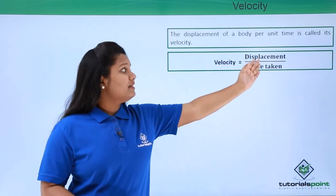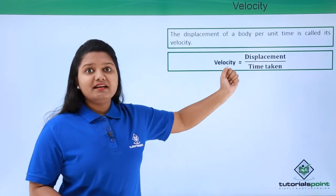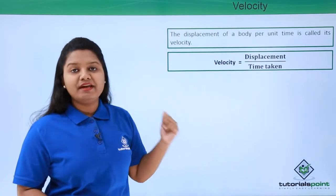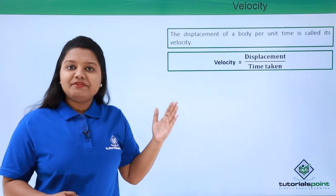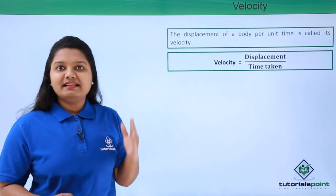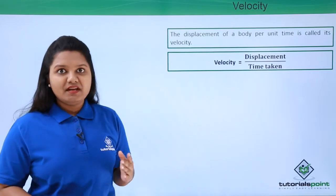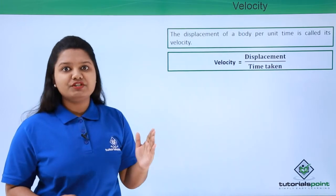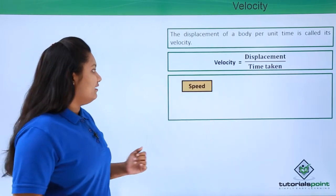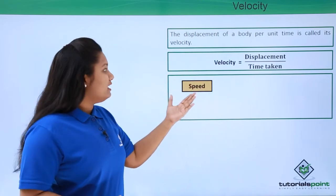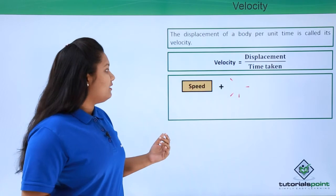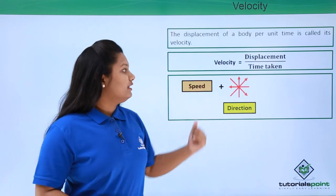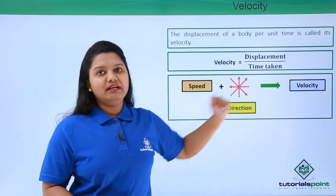Since displacement is a vector quantity, velocity — which depends upon displacement — is also a vector quantity. Every vector quantity is associated with two things: magnitude as well as direction. So whenever we talk about velocity, we need to specify the direction of motion, including both the speed of the body and the direction in which it is moving, to give us the complete velocity.